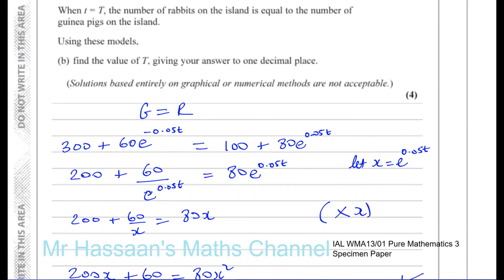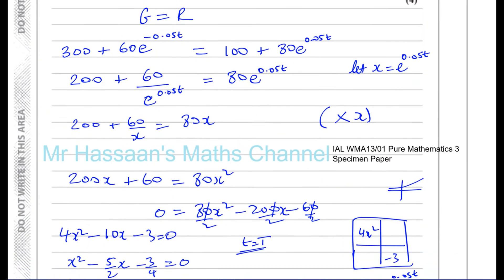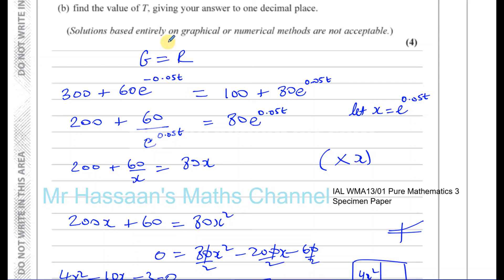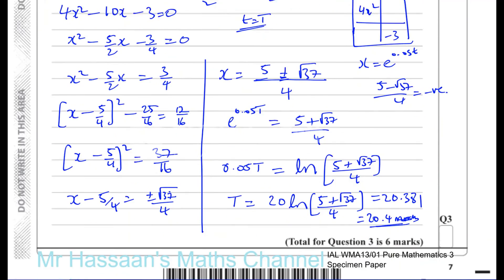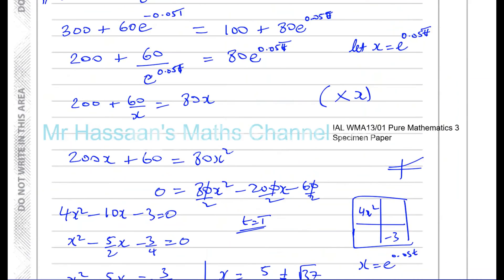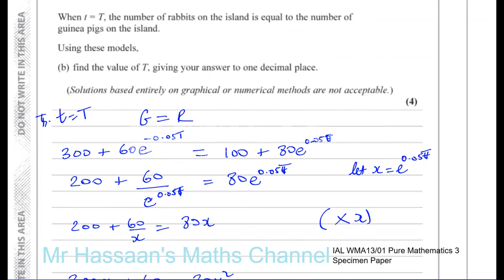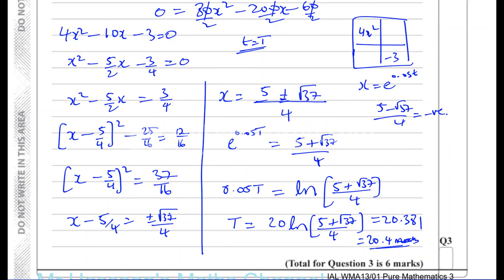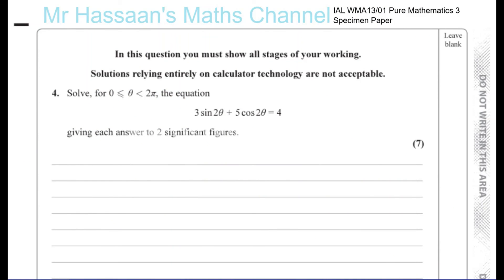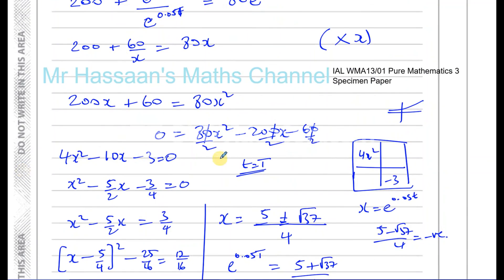One thing I should have done earlier is use capital T throughout, since it's when small t equals capital T that g equals r — so all those t values in the working should have been capital T. That's the answer to part (b), and there's no part (c) — that's the end of the question. Thank you for watching.